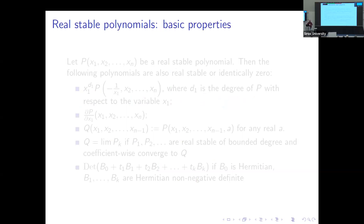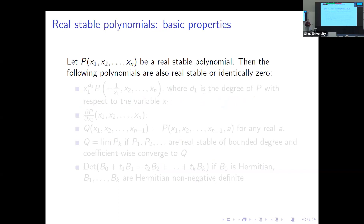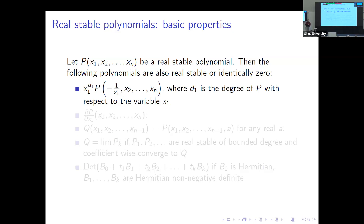Let me remind you of the basic properties of real stable polynomials, which show that this class is rich enough and enjoys good properties. So let P be a real stable polynomial. Then the following are also real stable, or identically zero. First, inversion in one variable is real stable — this is more or less obvious simply because minus one over x preserves the upper half plane, so substituting variables from the upper half plane is the same as evaluating P up to a small multiple.